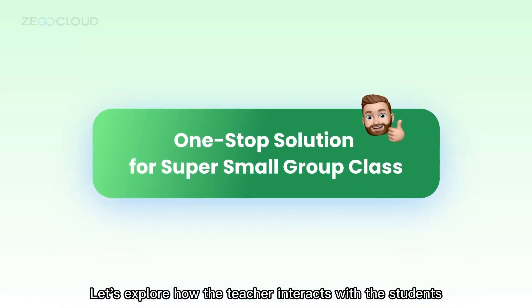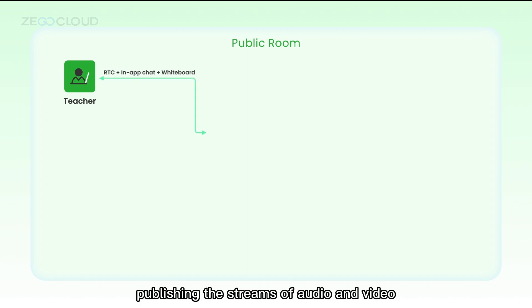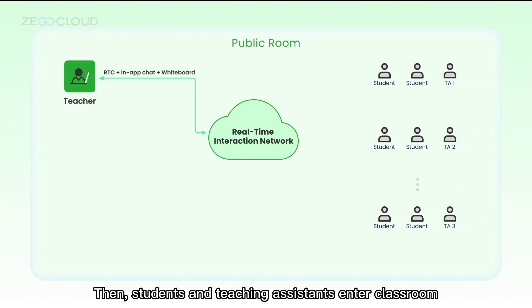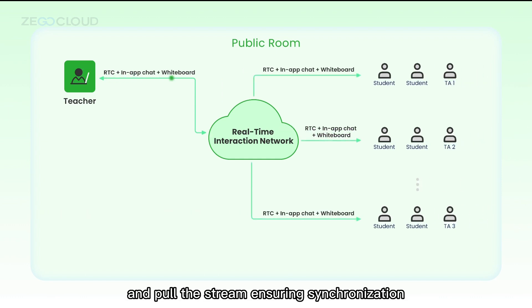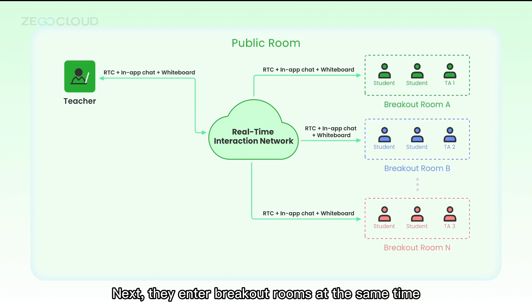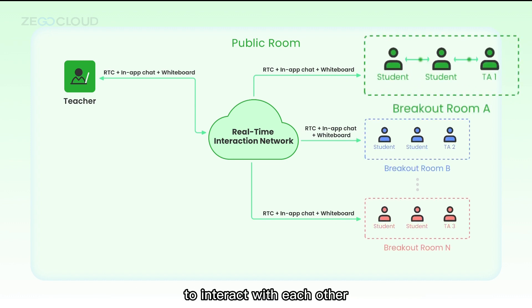Let's explore how the teacher interacts with the students. The teacher enters the public room, publishing the streams of audio and video to the real-time interaction network. Then students and teaching assistants enter the classroom and pull the stream, ensuring synchronization. Next, they enter breakout rooms at the same time to interact with each other.